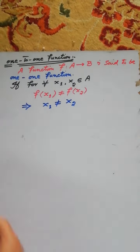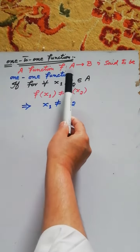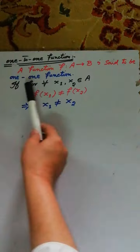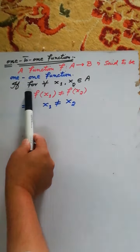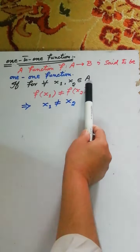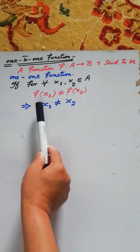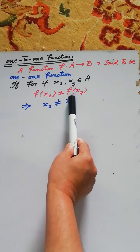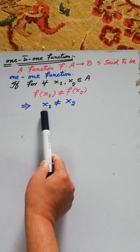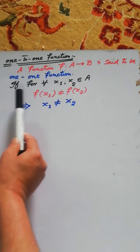Bismillahirrahmanirrahim. One-to-one function. It is a standard definition of a one-to-one function. A function f from a set A to a set B is said to be a one-to-one function if, for any two distinct elements x1 and x2 of set A, where set A is the domain of function f, f(x1) not equal to f(x2) implies x1 is not equal to x2. Then the function f is a one-to-one function.